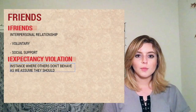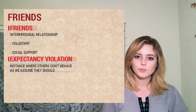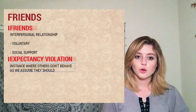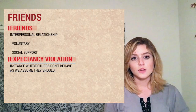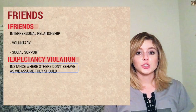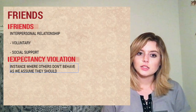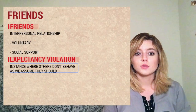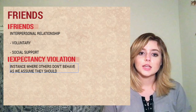After Mulan goes off to war, we see her first interaction with what will potentially become her friends. Our book defines friendship as being voluntary and providing social support to one another. The difference between Mushu the dragon and her war friends is that essentially in the beginning, Mushu was sent to help Mulan as an involuntary action on his part. However, before Mulan finds friendship, she's faced with a challenge known as expectancy violation, which can be defined as an instance where others don't behave as we assume they should — a behavior that can lead to awkward or even tense situations.